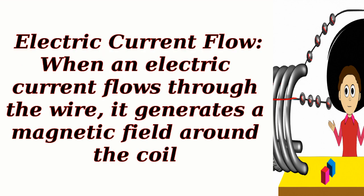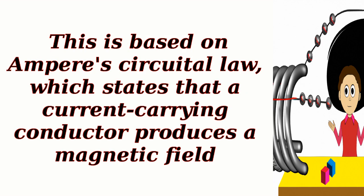Electric current flow: When an electric current flows through the wire, it generates a magnetic field around the coil. This is based on Ampere's circuital law, which states that a current-carrying conductor produces a magnetic field.